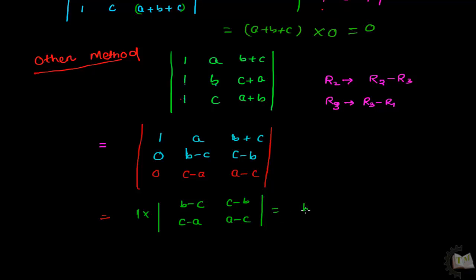If you multiply this two term, you will get c square minus all into c square.